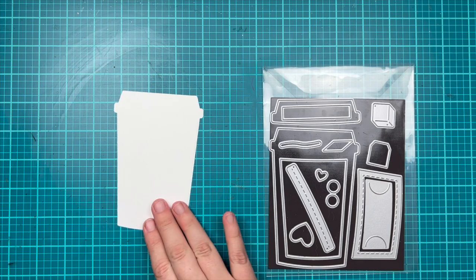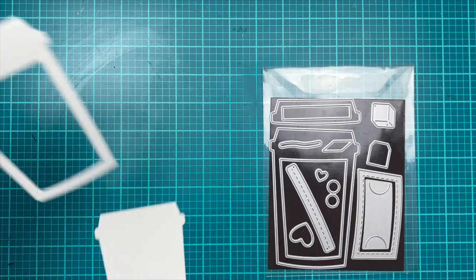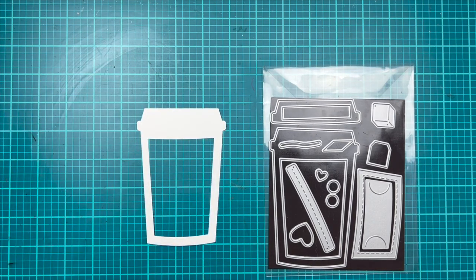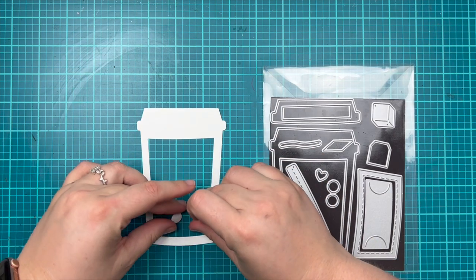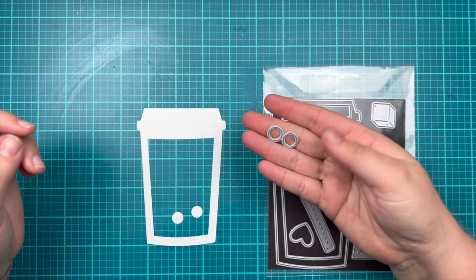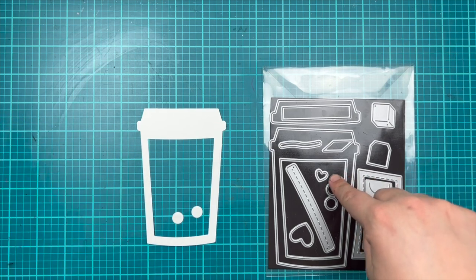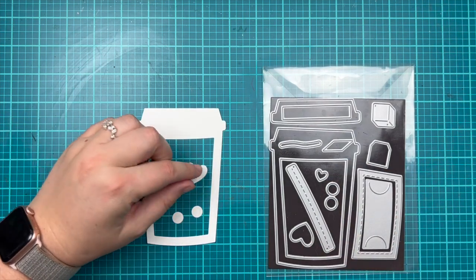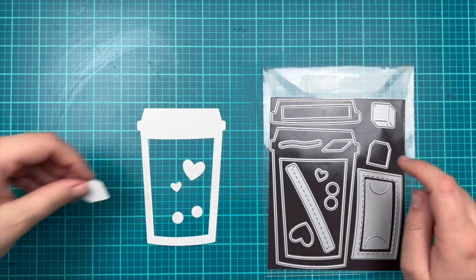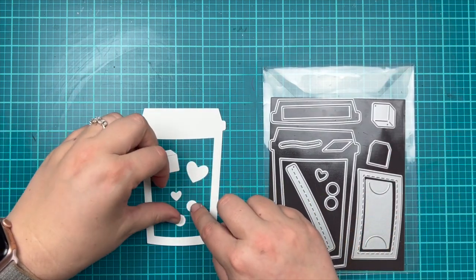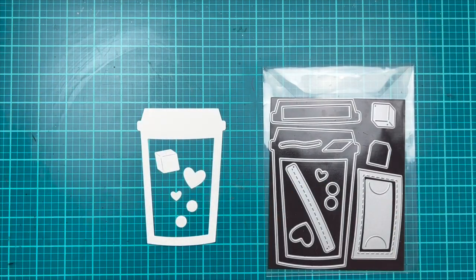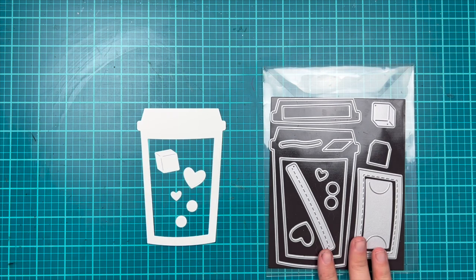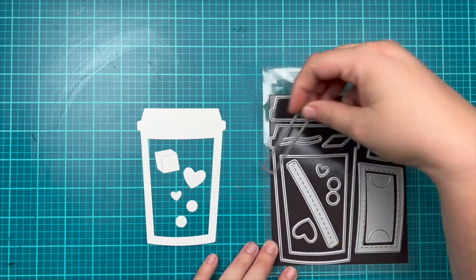Another way you could use this as a shaker is with some of the dies in the set. There is a set of two circles which can make really cute little boba tapioca balls for inside of a shaker card. There's also a small heart and a large heart which are perfect for shakers, and one of my favorite die cuts is this adorable ice cube or maybe a sugar cube depending on how you'd like to use it.